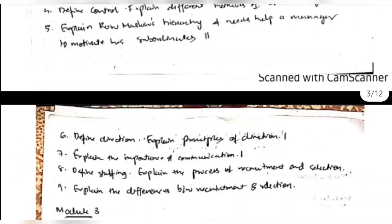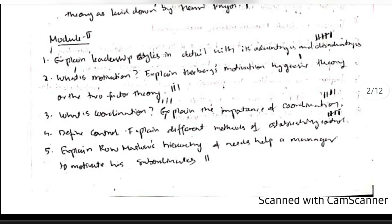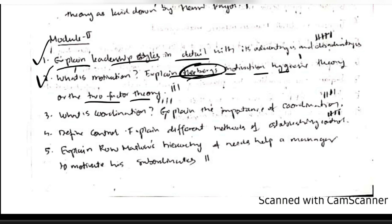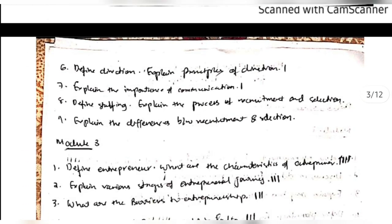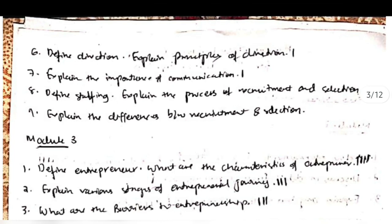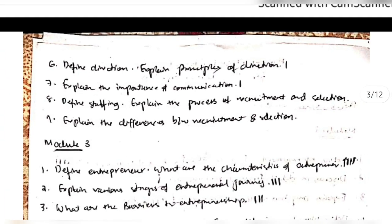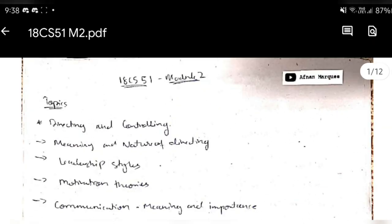That's pretty much about Module 2. The previous exam questions cover topics we've discussed: explain the leadership styles, what is motivation and the two-factor theory, what is coordination, define control, and explain the different methods of establishing control. These are straightforward, repeated questions, so make sure you don't miss them before your exam. Thank you for watching — see you in the next one.